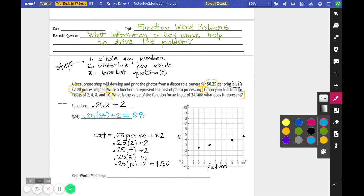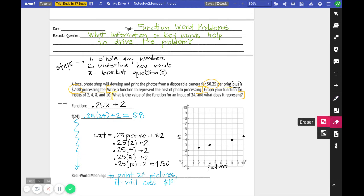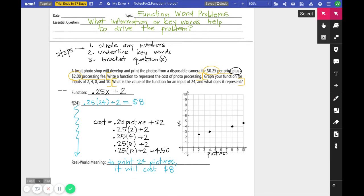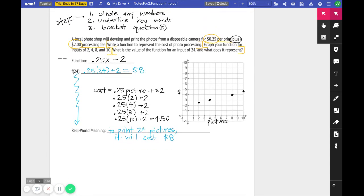Okay. So my real world meaning. That's where I'm going to take this and apply it down here. To print 24 pictures, it will cost $8. $18? No. $8. Sorry about that, fam. Okay. So as you're working through this, you're using the language in the problem to help you.